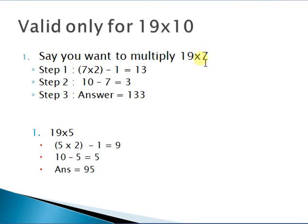Now in this example, as I multiplied 19 into 7, so 7 into 2 minus 1, that is 13. 10 minus 7, that is 3. Put 3 over here, you get the answer 133.